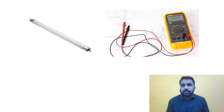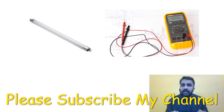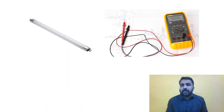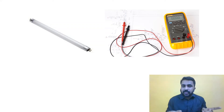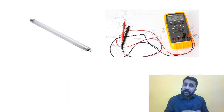Turn the multimeter to continuity mode. When you touch the red and black probes together, you will get a small buzzer sound, which means the multimeter is working. Now take the red and black terminals and connect them to one end of the tube light — it has two terminals. If you hear a sound, one side is working. Then check the other end. If you get continuity there too, the tube light is fine — the problem may be in the choke, low voltage, or wiring continuity.